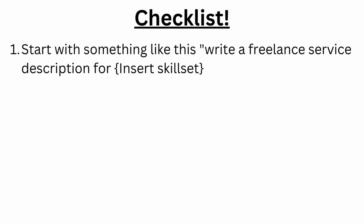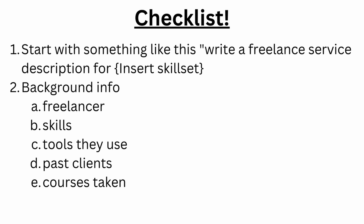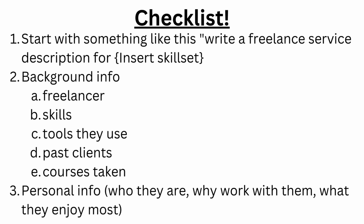The thing is, to get results like that, through my testing I found you have to be typing in very specific things. So I made an easy-to-follow checklist you can use to make sure ChatGPT gives you solid results every time. Start with an identifier like 'Write a freelance service description for a [specific type of service].' Then include background on the freelancer — their skills, tools they use, time in the industry, examples of past clients, any courses taken, a bit of personal info, and what will be included with the delivered service.